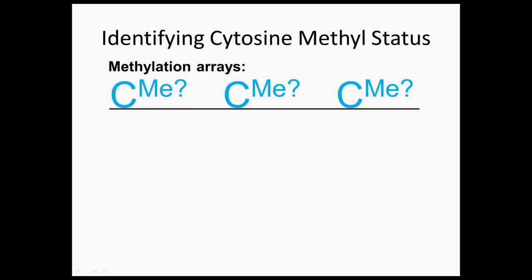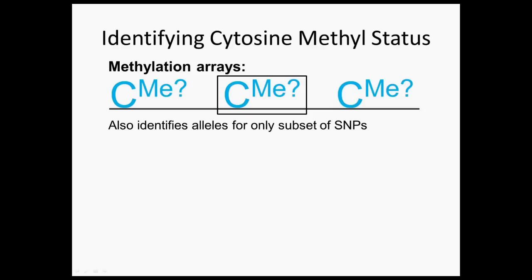Now I'm going to describe our novel method for finding MQTLs. First I need to tell you about the way that we figure out whether or not C's are methylated. The most popular way of doing this is called methylation arrays. The way methylation arrays work is we pick a subset of C's in the genome that we are interested in and probe whether or not these C's are methylated. When we do this we take an average across the cells in our study, so if the C's vary between the two copies from the two parents, we will be taking an average of that.